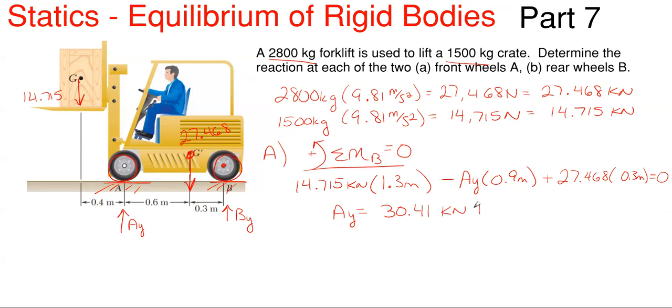Now, what the problem is asking is the reaction at each of the two front wheels. This is just the total axle reaction that is happening. This has to be distributed to two wheels, so the answer for each wheel will just be Ay divided by two. We would have our 30.41 kilonewtons divided by two wheels, which equals 15.21 kilonewtons in that upward direction for each wheel in the front.